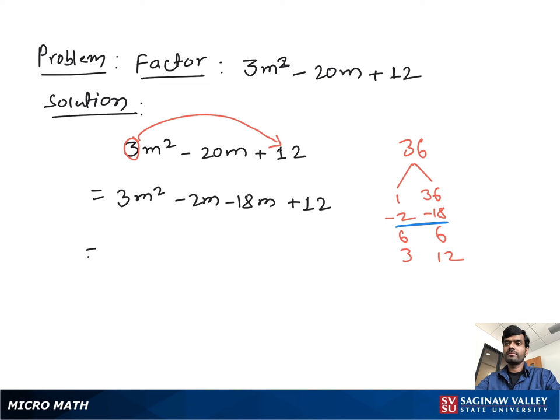Now from this we take m as a common. Then we have 3m minus 2. And from this group we take minus 6 as a common.